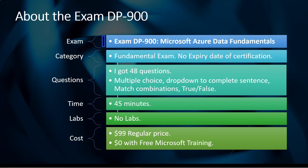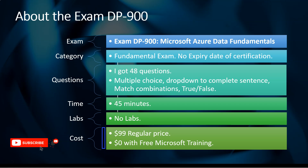The exam name is DP-900, which is Microsoft Azure Data Fundamentals. It is a fundamental-category exam with no expiry date for this certification. I got 48 questions — all were multiple choice, drop-down to complete sentences, match combination, and true-false. The time was 45 minutes and I was done in 20 minutes. It was pretty quick and straightforward with no labs. The cost is $99, but there is a free Microsoft training option. Once you attend that training, you get a free exam voucher and can take this exam for $0. I'll put a link in the description, and you can avail that offer along with multiple other fundamental exams.